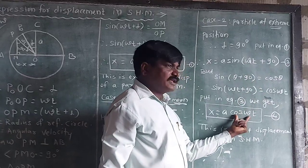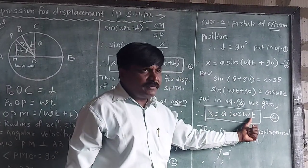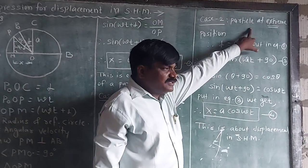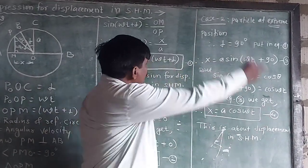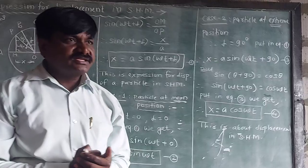Therefore X equals A cos omega T. This is the displacement at extreme position, and this is the expression of displacement of a particle performing SHM. Thank you.